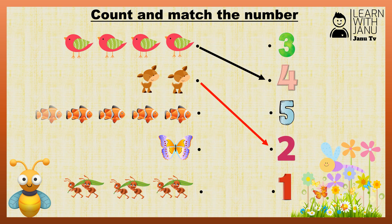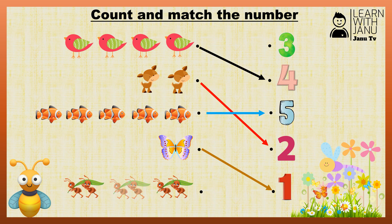1, 2, 3, 4, 5 — Match with 5. 1 — Match with 1. 1, 2, 3 — Match with 3.